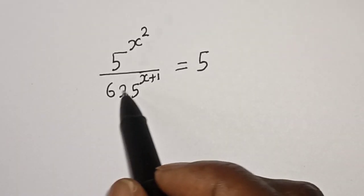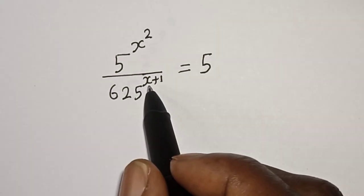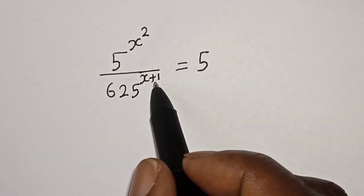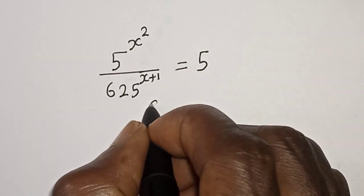Five raised to power s squared over 625 raised to power s plus one is equal to five. Hi everyone, welcome to my class. In this class I want to find the value of s from this given beautiful equation. But before we proceed, please don't forget to like, share, comment and subscribe.